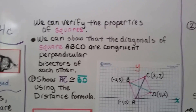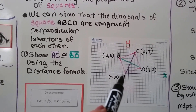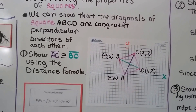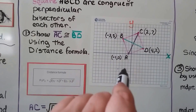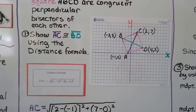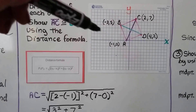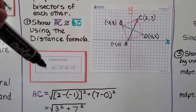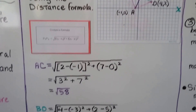We can verify the properties of squares. We can show that the diagonals of square ABCD are congruent perpendicular bisectors of each other. I'm going to show that AC is congruent to BD using the distance formula. We need the ordered pairs for A and C, and we're going to put them into the distance formula. Then we're going to use the ordered pairs for B and D and put them into the distance formula.